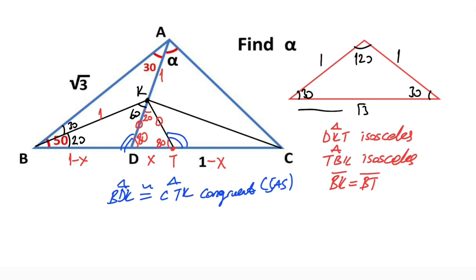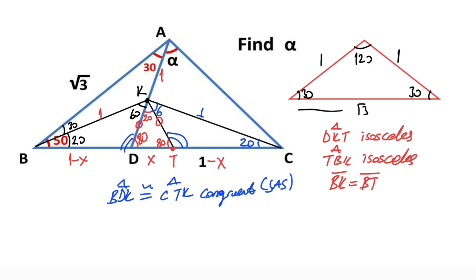We know that congruent triangles have the same sides and angles. So if there is a 20 degrees angle opposite of this side, the opposite of that side must also be 20 degrees. If there is a y unit opposite this angle, the opposite of that angle must also equal one unit. If there is 60 degrees opposite to this side, the opposite of the same side must also be 60 degrees. Focusing on the KT triangle, this triangle is also an isosceles triangle.